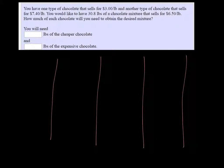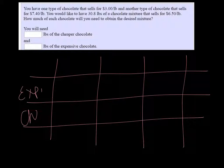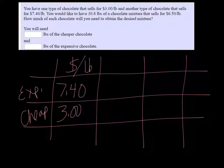Four columns, four rows. So we have the type of chocolate here, we have the expensive and the cheap. So the price per pound of the expensive was $7.40 and the cheap was $3. And we have the number of pounds. And all we know about that is that all together we are going to have 30.8 pounds.